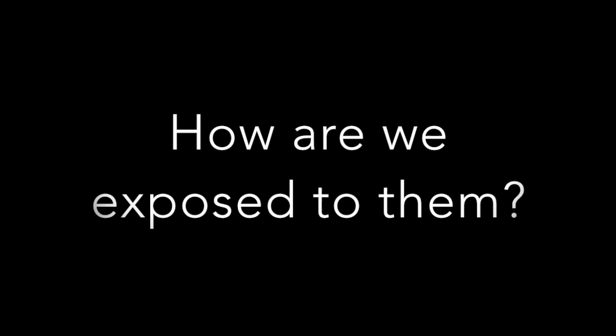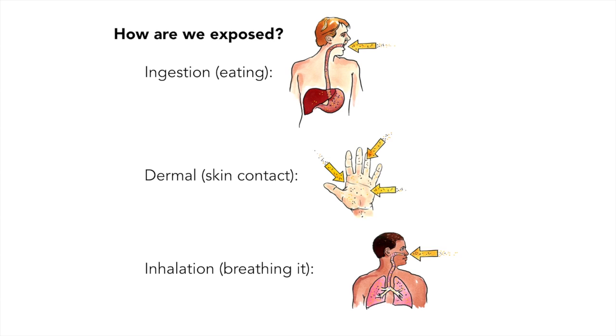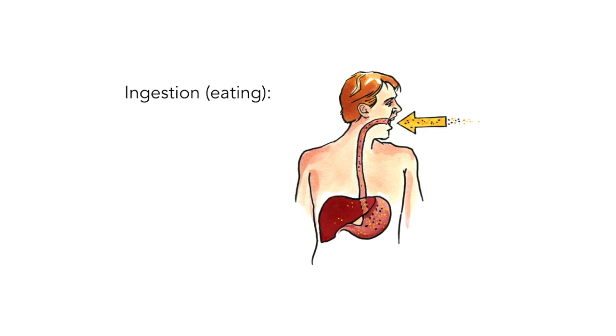How are we exposed to PAHs? We can be exposed to something by three major ways: through ingesting it, by contact with the skin, or by breathing it in. For PAHs, all of these exposure sources can be relevant. One of our most significant exposure pathways for PAHs is our diet and eating foods cooked in certain ways, most notably through grilling. When food, particularly meats with high fat content, is charred or blackened during grilling, it forms PAHs as well as other harmful compounds.